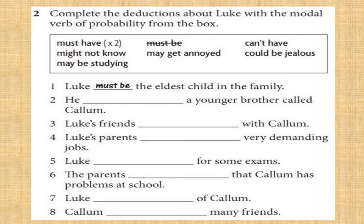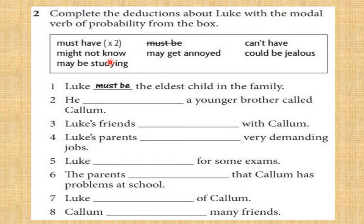After studying modal verbs of probability — the theory and forms — now all students do real practice with the lecturer. Choose the best answer to complete the deductions about 'Luke' with modal verbs from the box. The options include: must be, have been used to, twice, might not know, may be studying, may get annoyed, can't have, could be. Number one: 'Luke must be the eldest child in the family.' Number two: 'He must have a younger brother called Colin.'